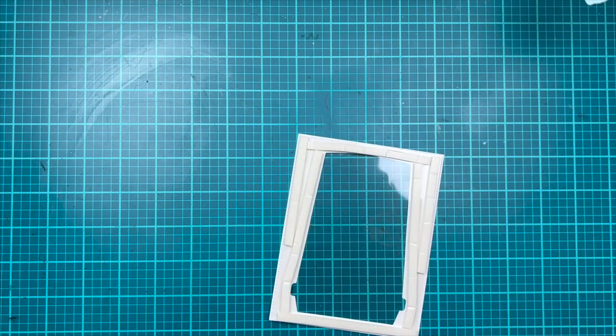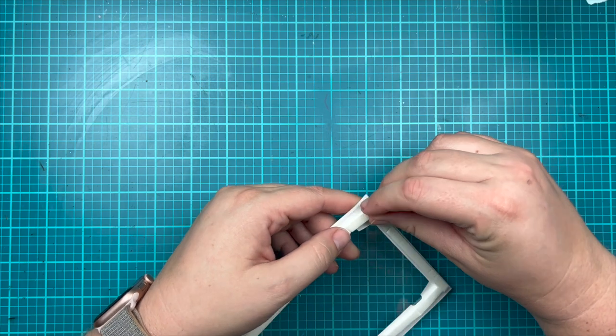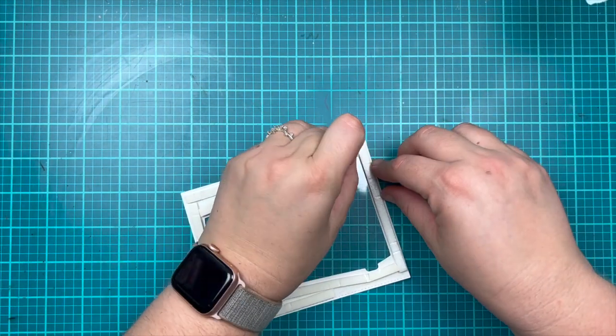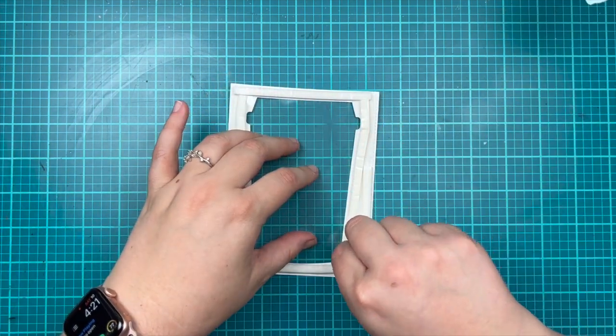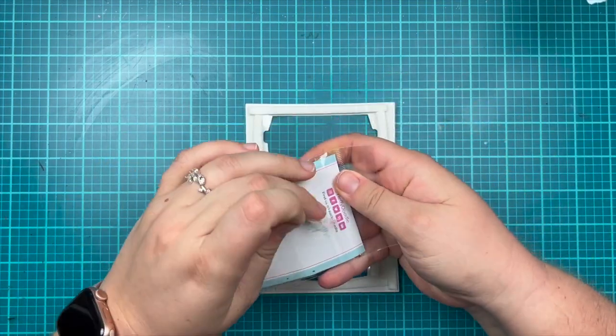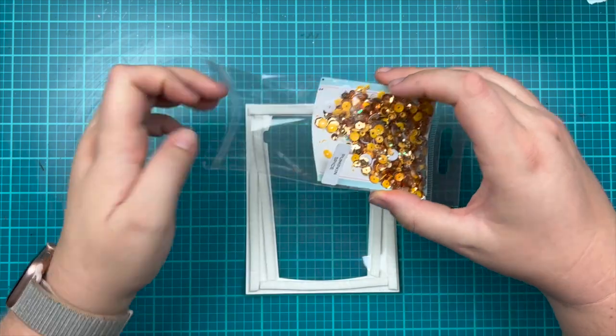Now that my foam adhesive is attached, I'm going to peel off all the release paper and grab my sparkle mix. I'm using the pumpkin spice sparkle mix of course, as my theme is a pumpkin spice latte. I'm going to pour in probably almost half the packet because this is a really large shaker card.